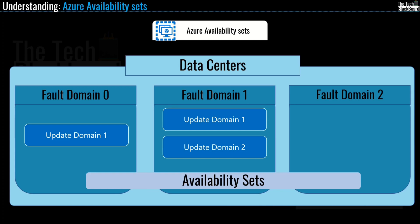Remember: only one update domain is ever rebooted at a time, but the reboot order is not necessarily sequential — the fifth update domain could be rebooted before the first. By default, virtual machines in an availability set are separated across up to three fault domains. While availability sets do not protect your application from OS or application-specific failures, they do limit the impact of potential physical hardware failures, network outages and power interruptions.